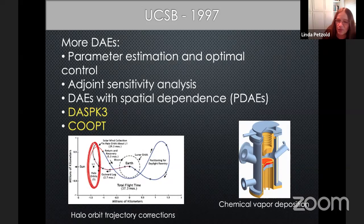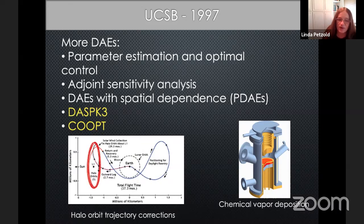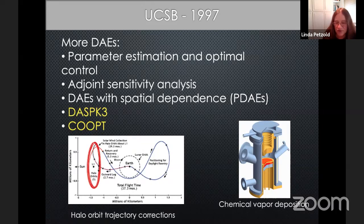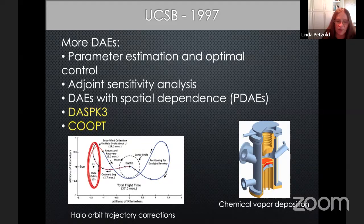Another thing I was doing was computations involving a chemical vapor deposition reactor — chemical vapor deposition of superconducting thin films. We worked on that for quite a while; it's a challenging partial differential algebraic equation problem. Interestingly, I'm about to revisit that problem, because UCSB has a gigantic NSF project called the Quantum Foundry, all about making materials for quantum computing. We're going to tackle this problem in a different form, speeding up some of the experiments, this time using machine learning.